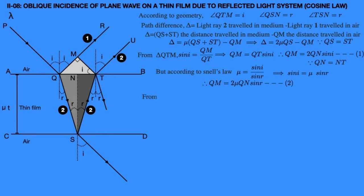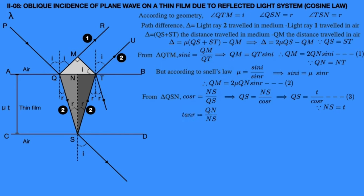From triangle QSN, cos R equals NS divided by QS. Therefore QS equals NS divided by cos R, which equals T divided by cos R, since NS is the thickness T of the film. Assume this is equation 3. Also, from triangle QSN, tan R equals QN divided by NS, so QN equals NS tan R equals T tan R. Assume this is equation 4.